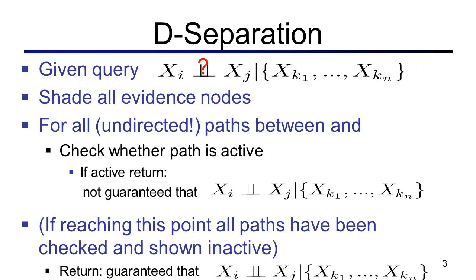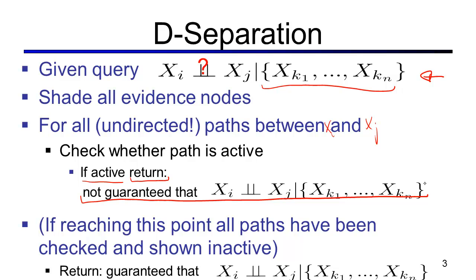To summarize, we'll be given a query: is xi independent of xj given some evidence variables xk1 through xkn? We check all undirected paths between xi and xj. If any path is active, we're done — we cannot guarantee that xi is independent of xj conditioned on these evidence variables. If we check all paths and all of them were inactive, then we are guaranteed that xi is independent of xj given all these evidence variables.